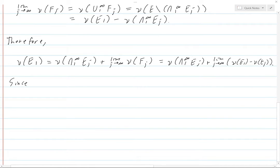Now, since nu of E1 is finite, we can subtract it. And so we have zero equals nu of intersection from 1 to infinity of EJ.